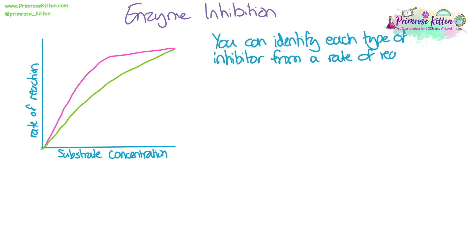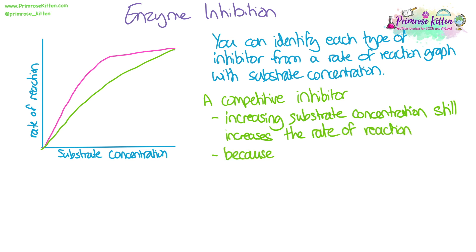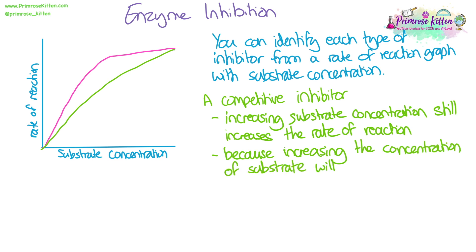You may be asked to look at a graph and identify which line represents a different type of inhibitor. Normally this is done with a rate of reaction graph with substrate concentration on the x-axis. We can recognise the competitive inhibitor because if you increase the substrate concentration, the rate of reaction will still increase and eventually meet the same endpoint as a normal enzyme reaction. This is because increasing substrate concentration allows the substrate to out-compete the competitive inhibitor, so more substrate molecules bind and create enzyme-substrate complexes.